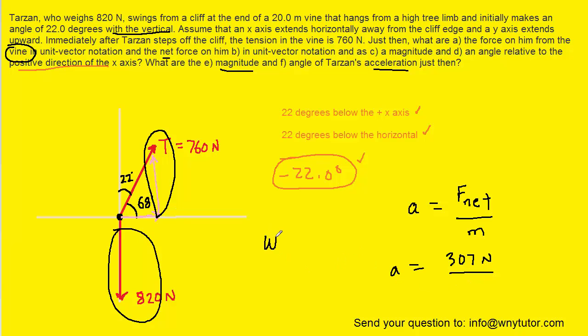So we have to come over here and remember that the weight of Tarzan equals his mass times gravity. The weight was stated to be 820. The gravitational constant is 9.8.